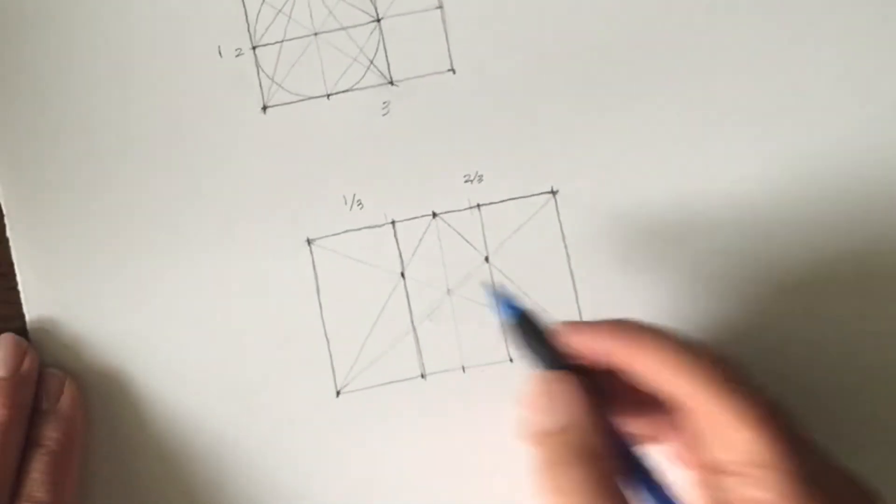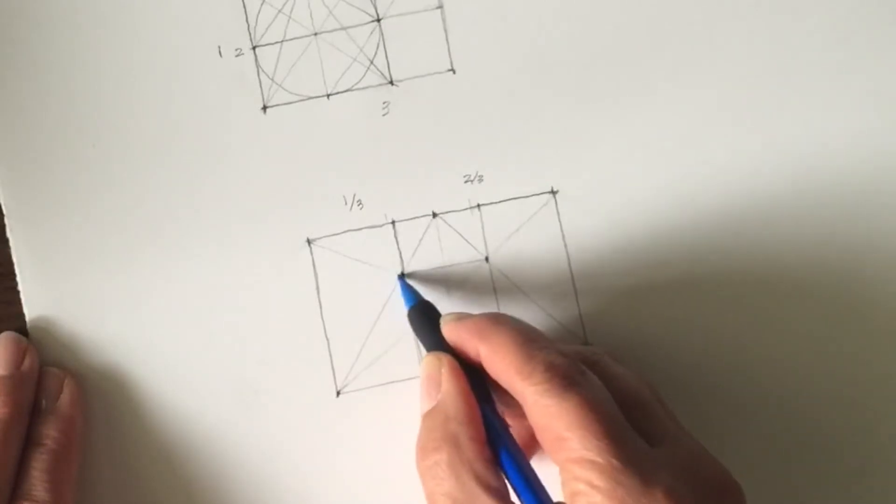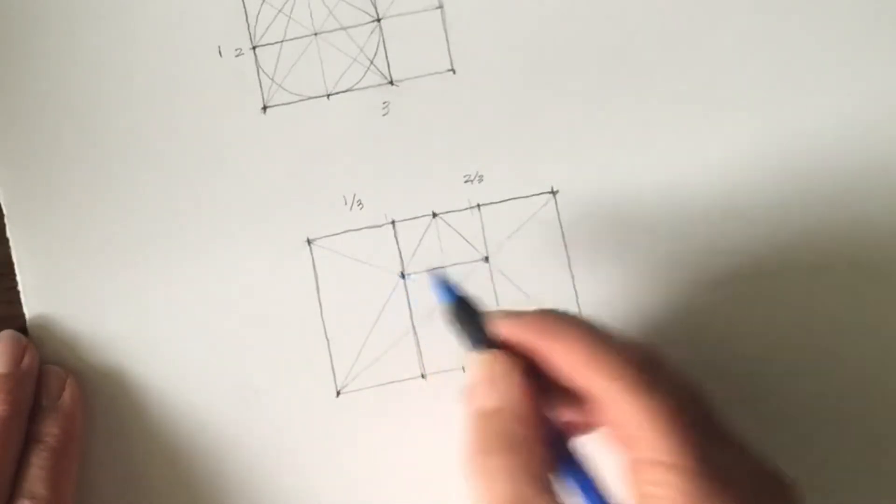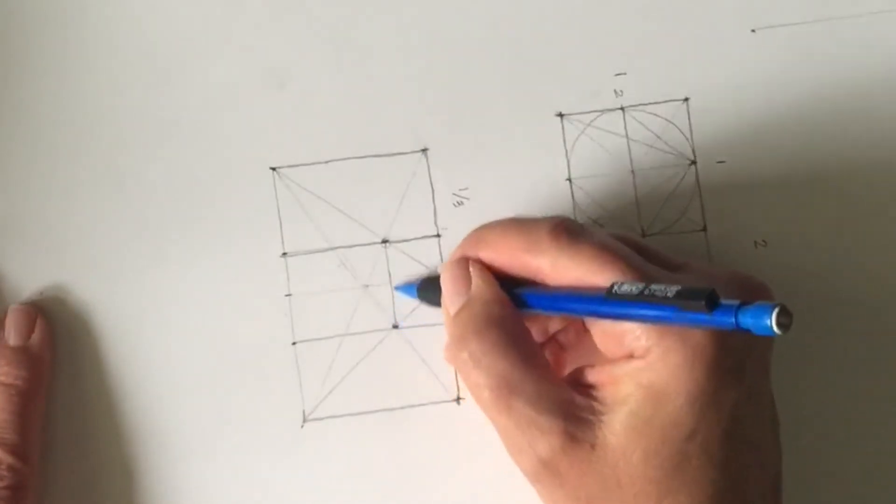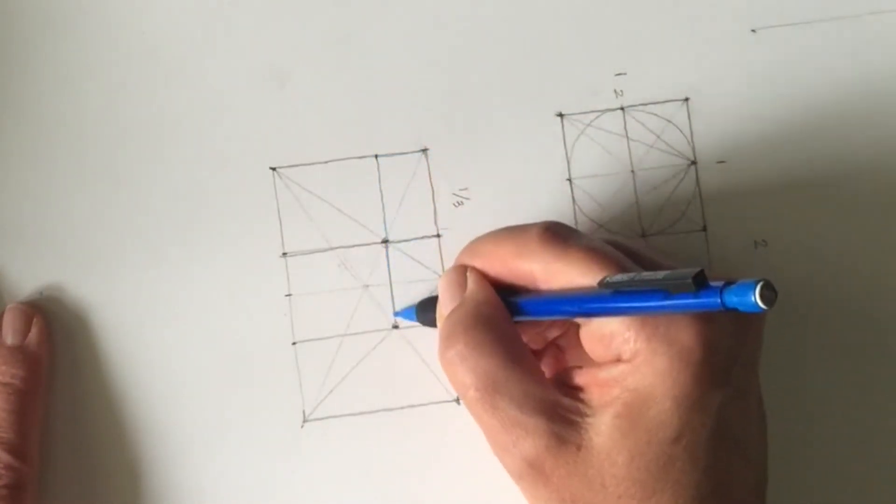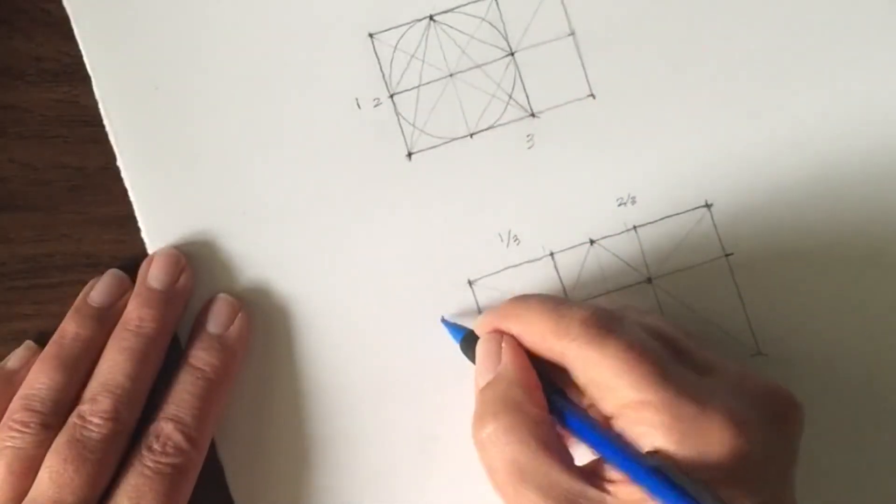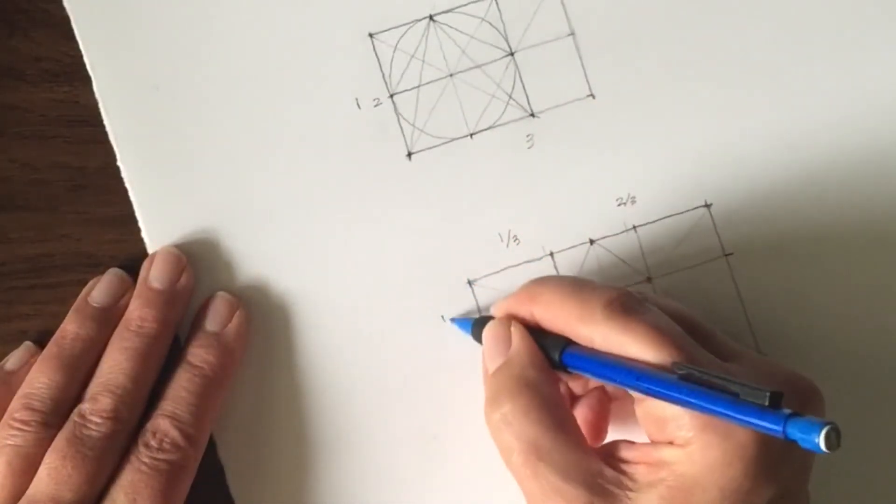And just some checks. These should be straight across from one another. And, lo and behold, if I actually extend that line to the other side, then I'm now in the process of breaking this rectangle up into, or this line right here, into thirds. So we've got it underway.